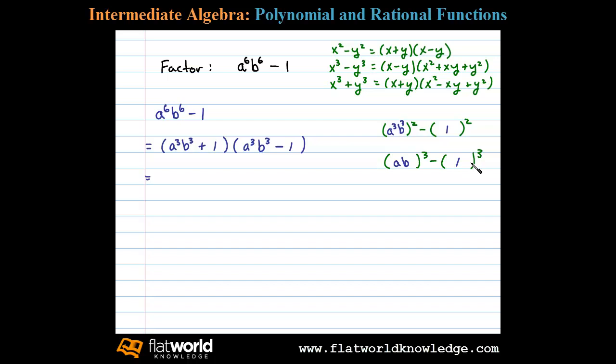Therefore we can apply the sum of cubes formula to this first factor. In that case we get a b plus one times a b squared minus a b times one plus one squared. Next we'll apply the difference of cubes formula to the second factor.